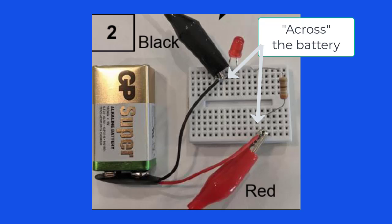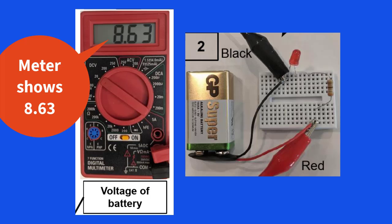Here we show the meter leads connected across the 9-volt battery. What does the meter show in this example? It shows 8.63. What does that mean? Well, because we're on the 20-volt DC range, it means 8.63 volts DC.